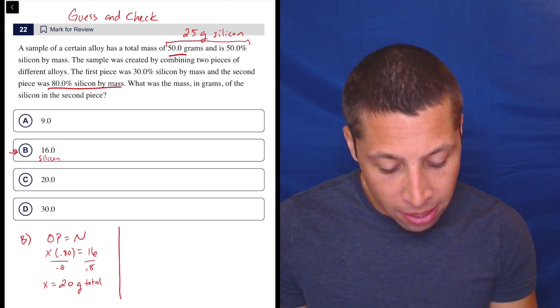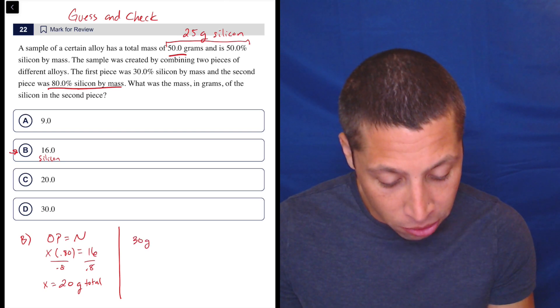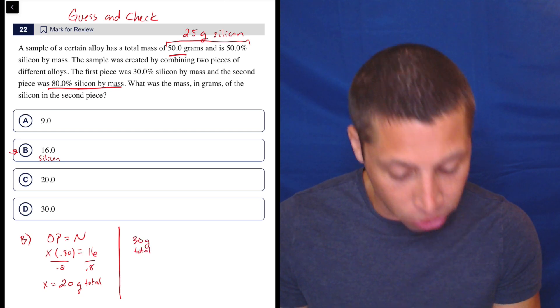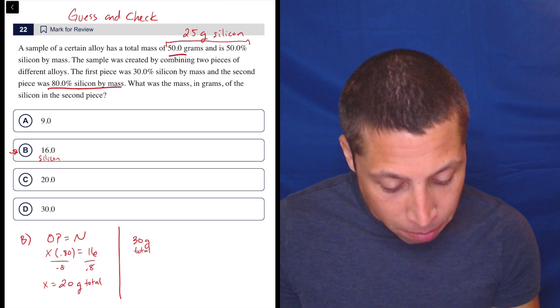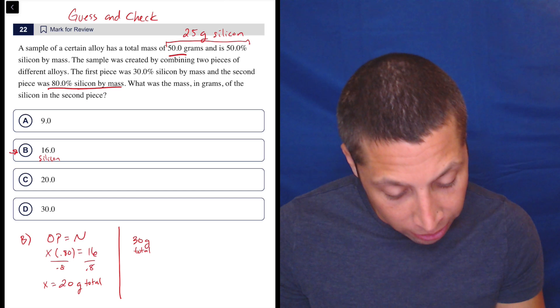Right? Because 20 plus 30 is 50. And that has to be also, since we had 25 grams of silicon, 25 grams of silicon minus the 16 grams we had is nine grams of silicon.